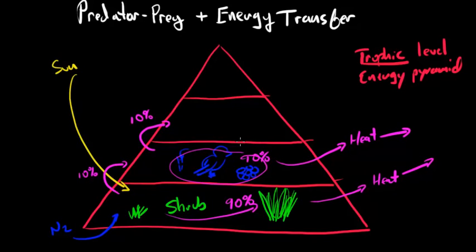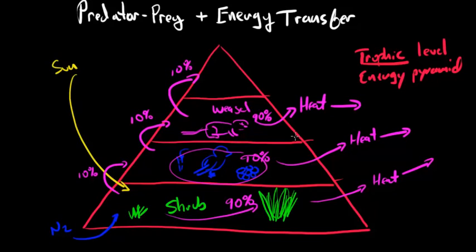At our next level we have a weasel. Here's our weasel - it looks more like a lizard but it's a weasel, trust me. It gets energy from the bird that it ate, and of that, 10% gets passed on and 90% gets used up and then eventually lost in the form of heat to the atmosphere. You can see it's a pretty inefficient system from that aspect.